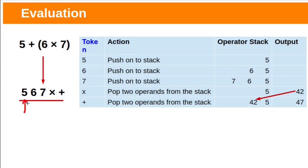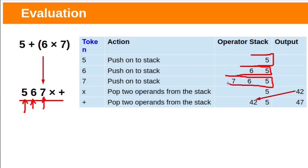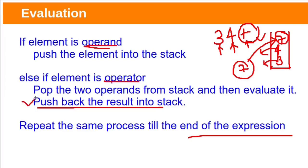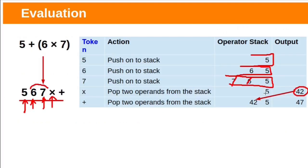Let's take another example with the postfix expression. After reading the first character, it is an operand, so push it onto the stack — stack contains pi. Reading 6, also an operand, push it. Reading 7, also an operand, push it onto the stack. The next character is the multiplication symbol, which is an operator, so pop the top two elements — 7 and 6 — multiply them to get 42, and push 42 back onto the stack. Pi remains in the stack, with 42 pushed on top.